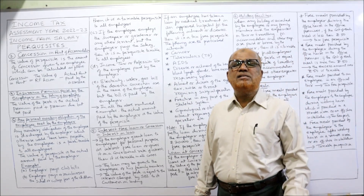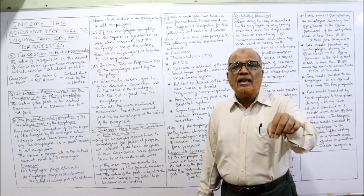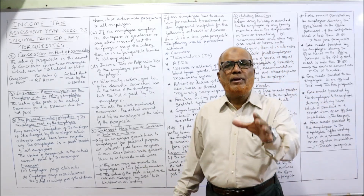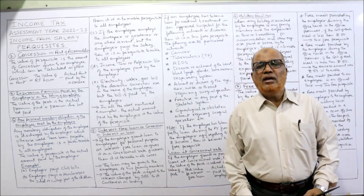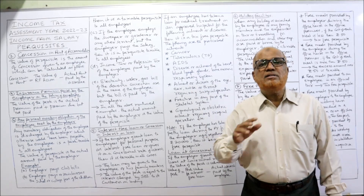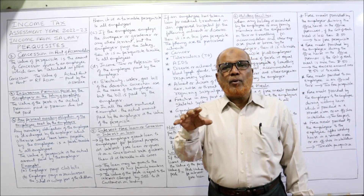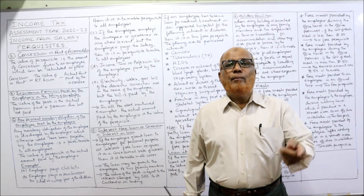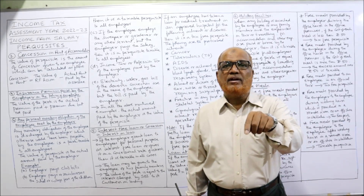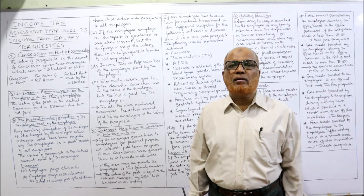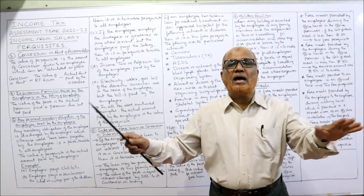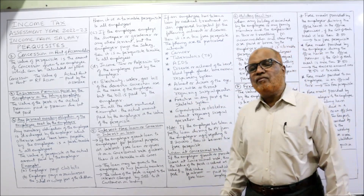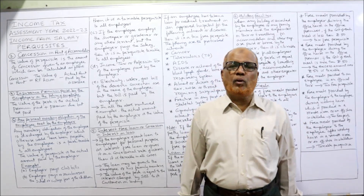If the employee employs a sweeper, gardener, or any other servant but the salary is paid by the employer, it is fully taxable. For example, if Mr. X has appointed a sweeper, gardener, or other servant but the salary of that servant is being paid by the employer, it's a taxable perquisite in the hands of all employees. Similarly, income tax or professional tax of the employee paid by the employer is also taxable.